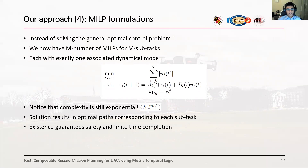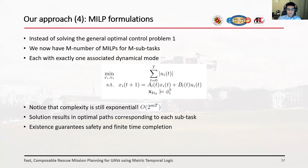The end result of this procedure is a mixed integer linear program for each subtask, where the satisfaction constraint of the system trajectory on a certain MTL specification is replaced by a set of mixed integer linear constraints. In summary, instead of solving one general optimal control problem, we have M MILPs for M subtasks, each associated with exactly one dynamical mode of the hybrid model. Notice that the complexity of this optimization problem is still exponential, where M represents the number of half-spaces and T is the discrete time horizon, so decomposing a complex mission into simpler subtasks is essential to decrease problem complexity and make it tractable.